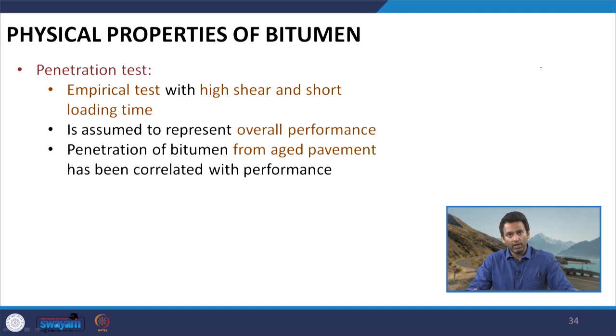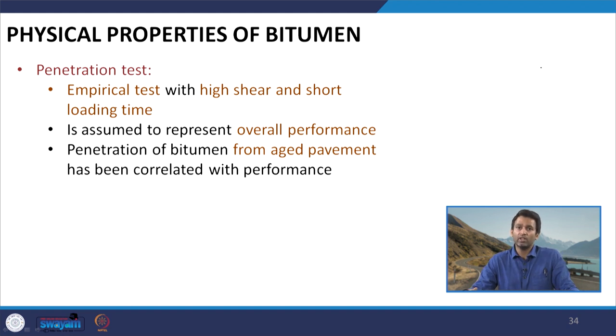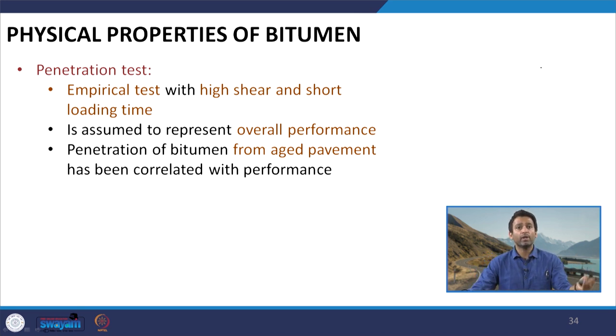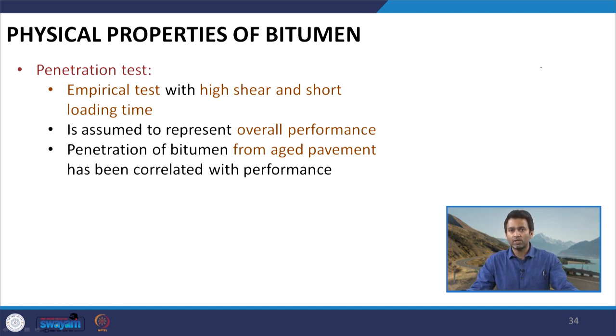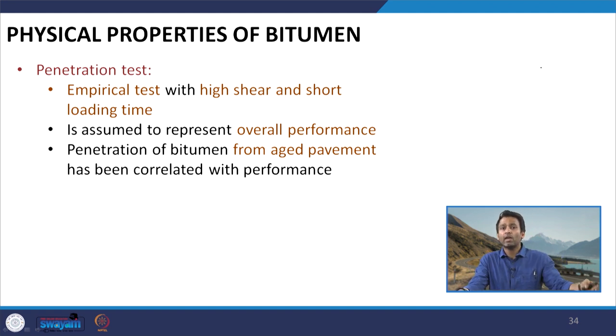Researchers have tried to relate it with the overall performance of the pavement, because the temperature chosen — typically 25°C — is the average pavement temperature. Earlier reports have indicated that penetration of unaged bitumen is not well correlated with observations of distresses in the field. The distress people have tried to relate here is fatigue cracking, which typically occurs at the average service temperature of the pavement. Unfortunately, penetration values of different bitumens are not found to be well correlated with actual observations of cracking in the field.